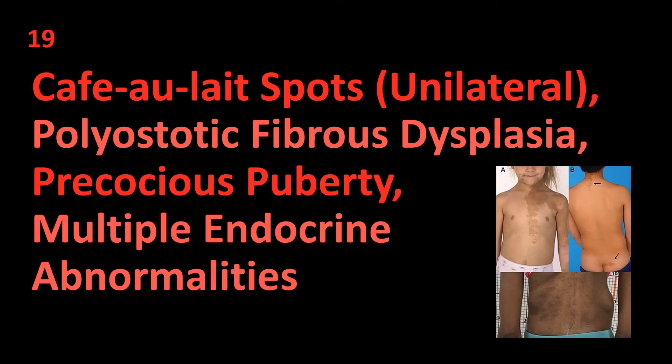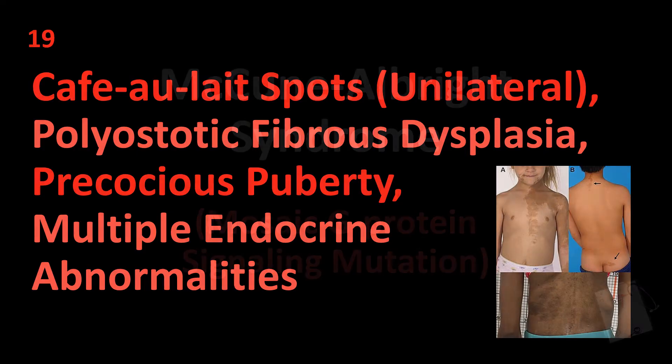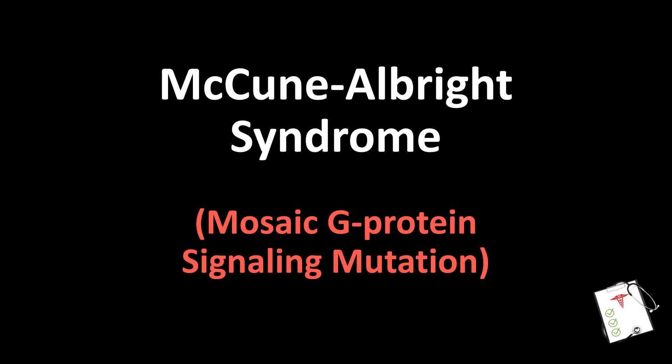Number 19: Café-au-lait spots (unilateral), polyostotic fibrous dysplasia, precocious puberty, multiple endocrine abnormalities. Answer: McCune-Albright syndrome — mosaic G-protein signaling mutation.